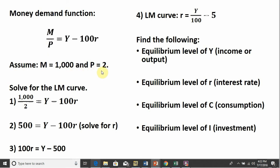Plugging 1,000 and 2 into the left-hand side and simplifying, we will now derive the LM curve. So 500 equals Y minus 100R, solving this for R. I'm moving over here, dividing through by 100.